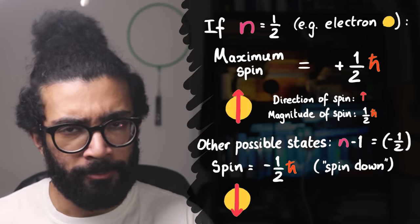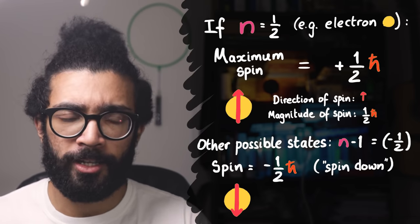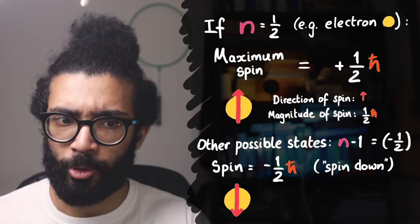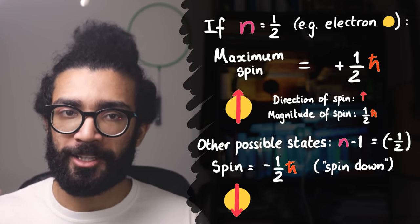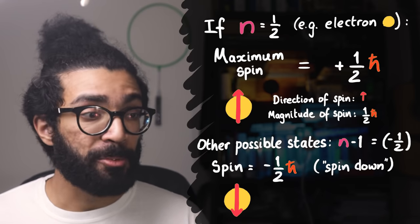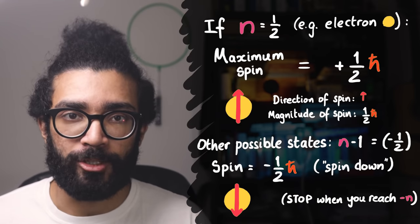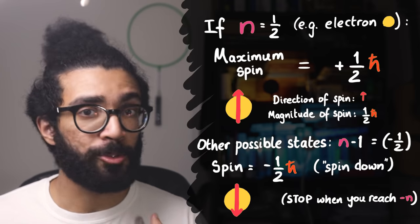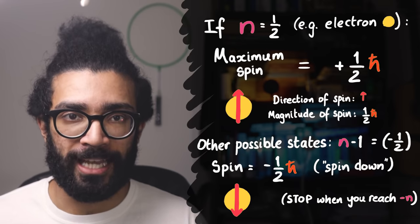Which just means the same sized angular momentum, half h-bar, but pointing in the opposite direction. Or in other words, spinning the other way. Now for an electron, that's as far as we can go. Because as soon as you hit the negative value of the original spin number, you stop. Those are all the possible states we can have.